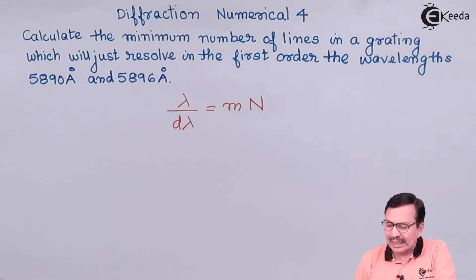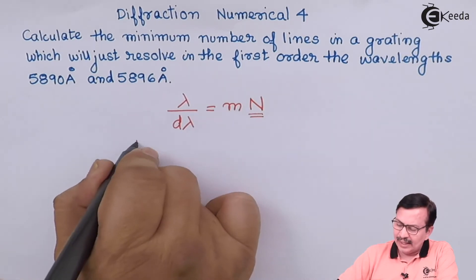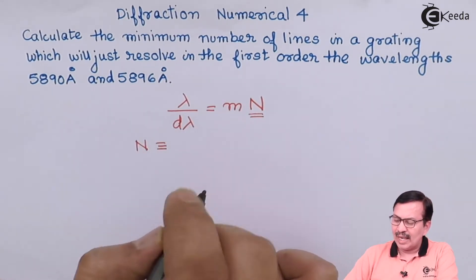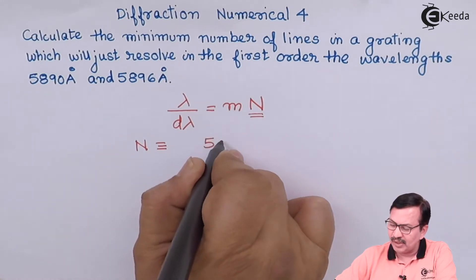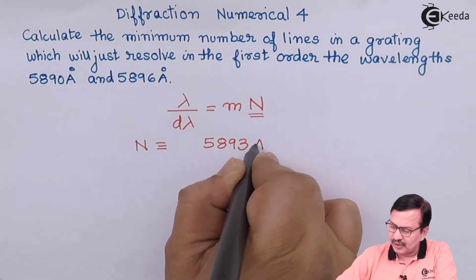So N equals lambda. Now we have been given two lambdas. We take the average of these two lambdas, and the average turns out to be 5893 angstroms.